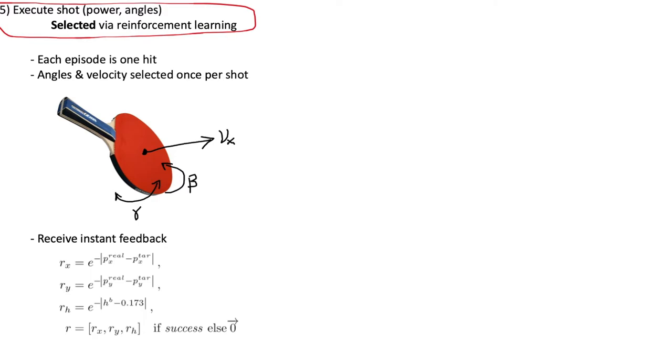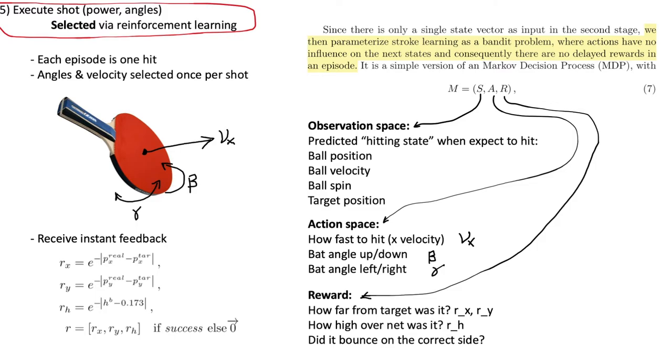The reward function has three components. The first and second are the distance between the target bounce position compared to the actual bounce position, both in the X and Y directions. And then they also want the ball to be as low as possible over the net. This avoids the robot doing like a high arcing return that might be safe, but not very fun to play against. The rewards are then all zero if the ball doesn't bounce on the opponent's side of the table.